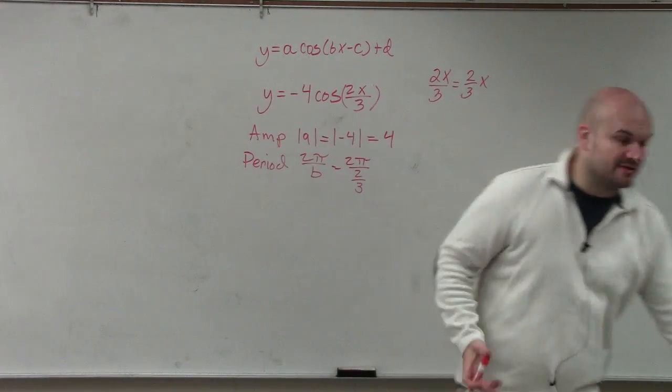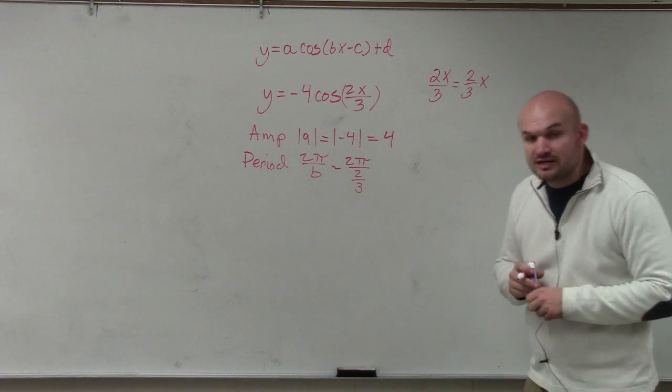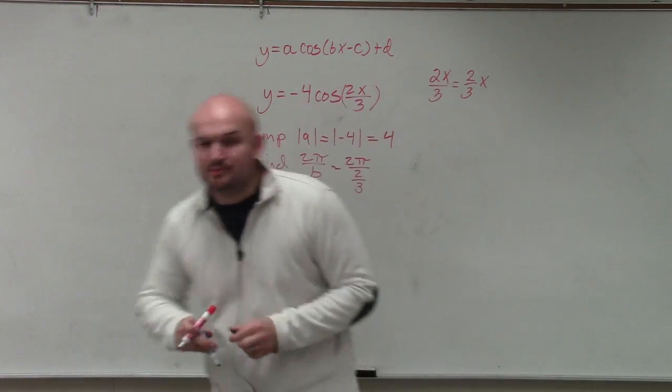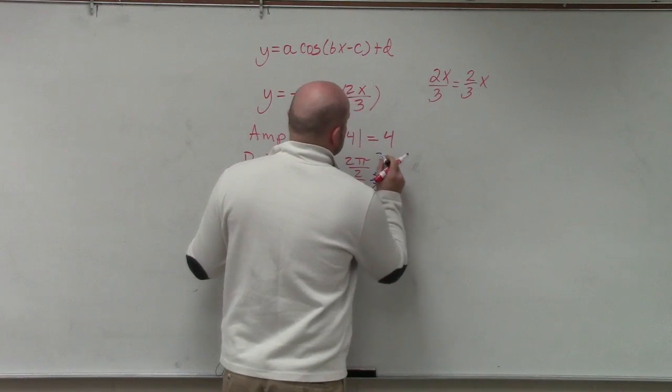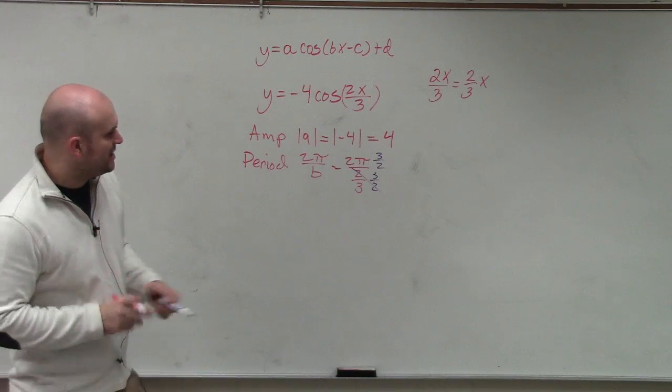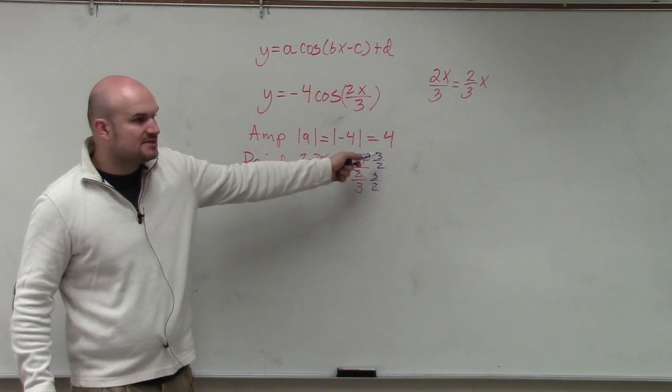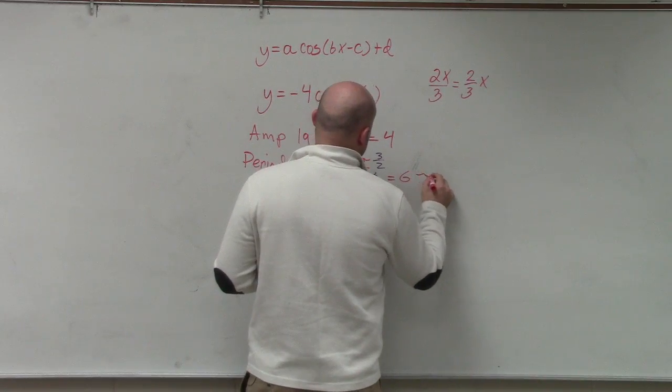So we have a fraction on our denominator. This isn't anything new. We've done quite a bit of problems like this. When we have a fraction on our denominator, to get rid of our fraction, we multiply by the reciprocal. 3/2, 3/2. 2π times 3/2 is going to leave you with 6π.